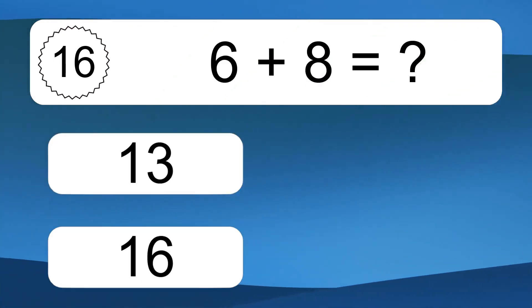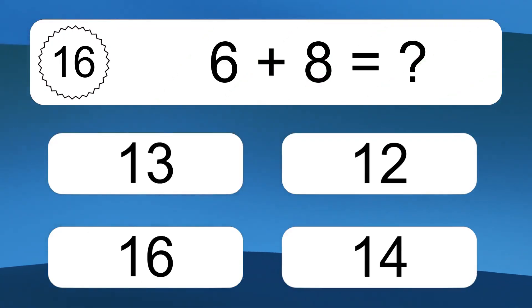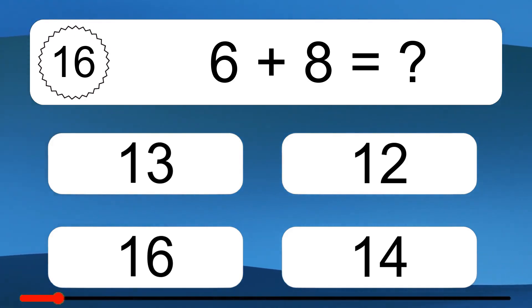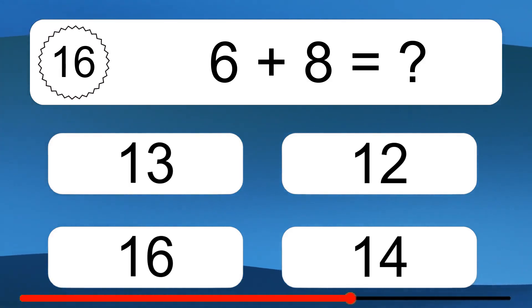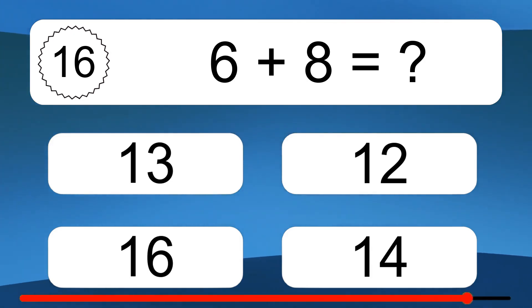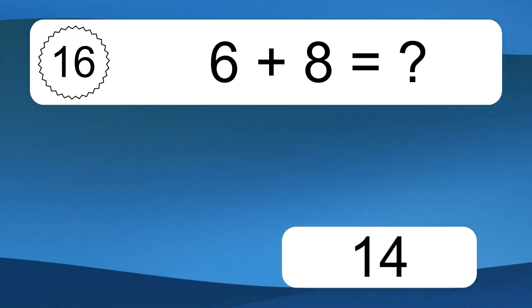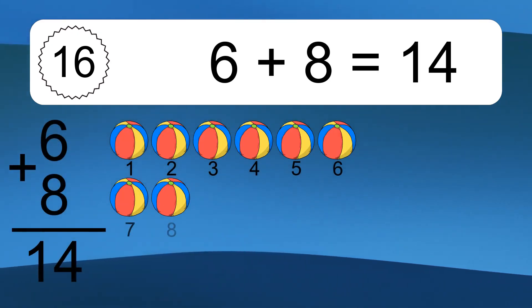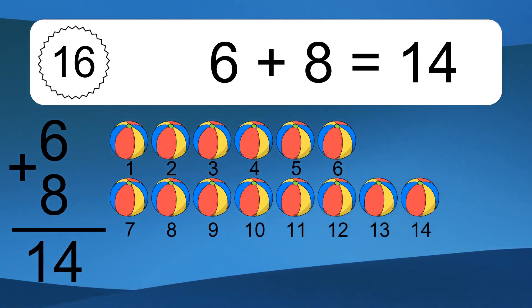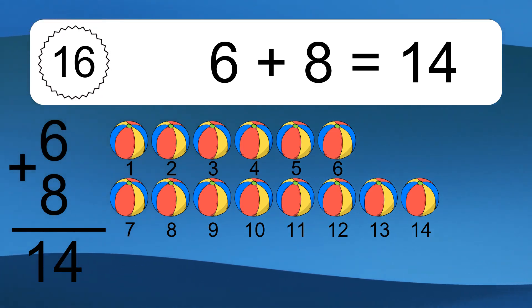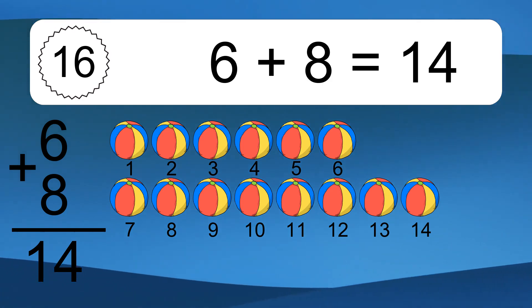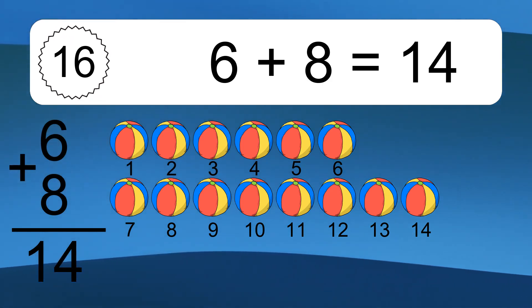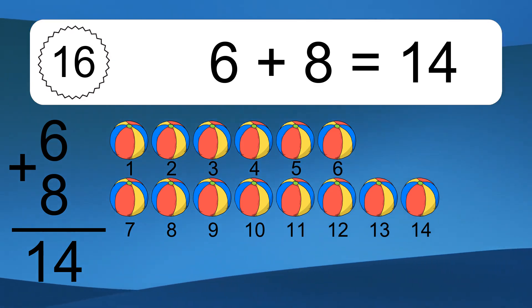6 plus 8 equals what? 6 plus 8 equals 14. Let's count it. 1, 2, 3, 4, 5, 6, 7, 8, 9, 10, 11, 12, 13, 14.